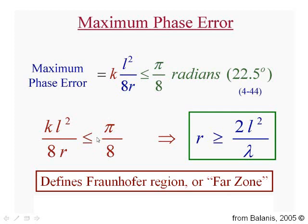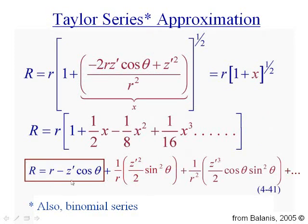So that would mean that kl squared over 8r has got to be less than or equal to pi over 8. Or in other words, the distance small r, in other words, the distance of the observer to the origin has got to be greater than or equal to 2l squared over lambda. If that holds, then the integral can be performed with high accuracy. And it actually defines for us now a region around the antenna where we can use this so-called approximation. This is the so-called Fraunhofer region or far zone around the antenna. So in the far zone, again, as long as r is greater than or equal to 2l squared over lambda, one can use this two-term Taylor series approximation.